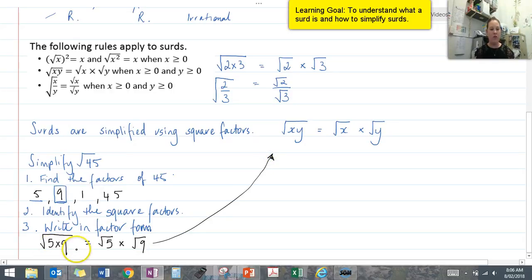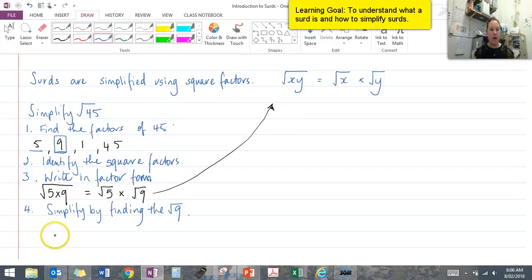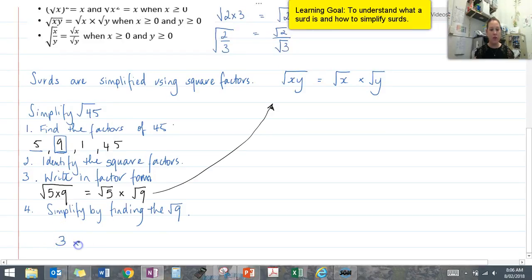Okay, and then once we've done that, we're going to simplify by finding the square of our 9. So then we can write that as 3 times the square root of 5, which can be simply written as 3 square root of 5. So therefore, our simplified version of the square root of 45 is 3 times the square root of 5.